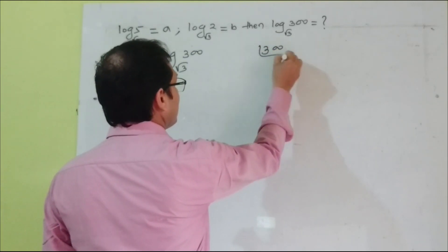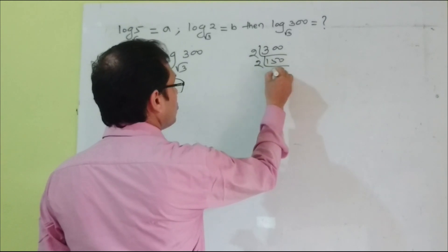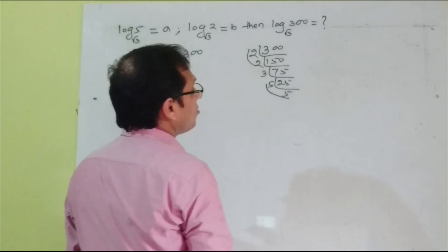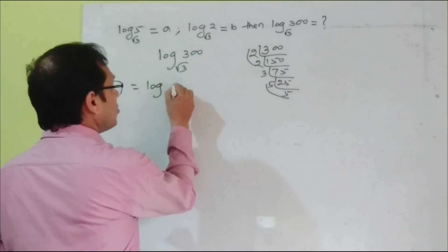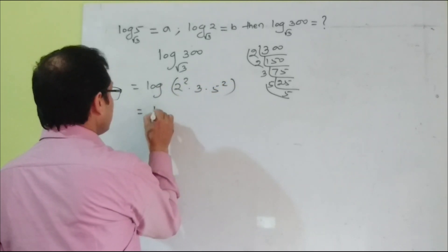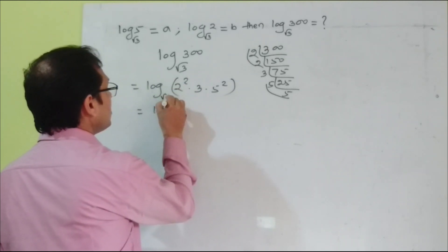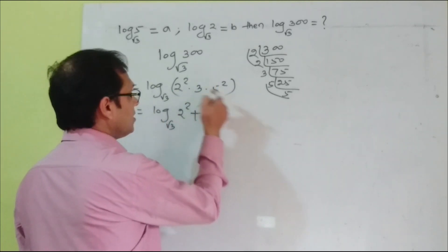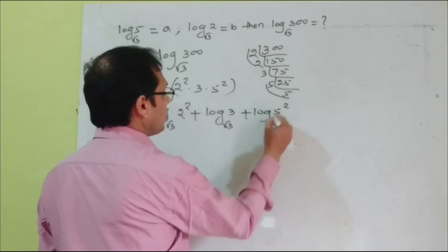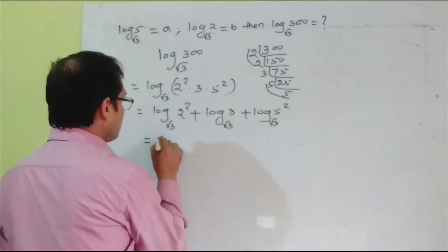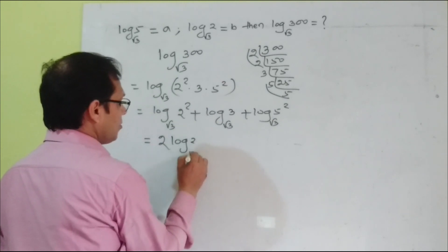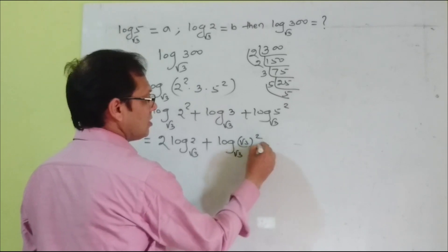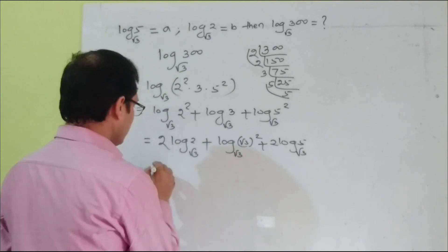First, factorize 300: 300 = 2 × 150 = 2 × 2 × 75 = 4 × 3 × 25, so 300 = 2² × 3 × 5². Then log 300 to the base √3 becomes log(2² × 3 × 5²) to the base √3, which equals 2 log 2 to the base √3 plus log 3 to the base √3 plus 2 log 5 to the base √3. Now, log 3 to the base √3 = log 3 to the base (√3)², which equals 2/2 = ... since (√3)² = 3.